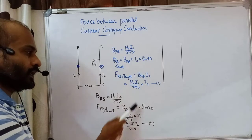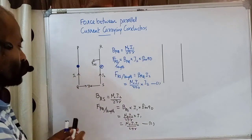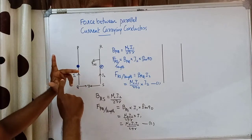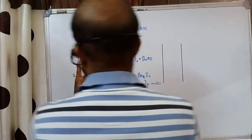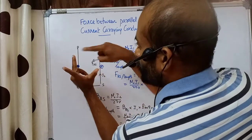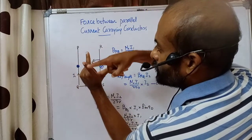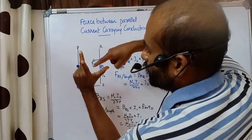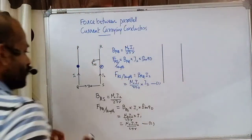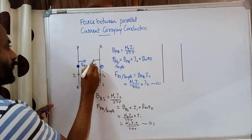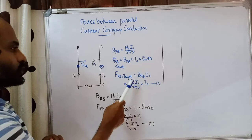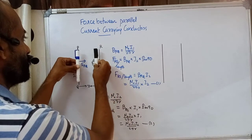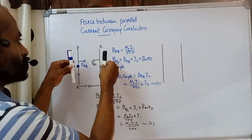We can see that both forces per unit length are equal in magnitude. For the direction of force on PQ, applying Fleming's left-hand rule: magnetic field is outward, current is upward — the force on PQ is directed towards the right side. So F_PQ per unit length points to the right. The two forces are equal in magnitude but opposite in direction, meaning the conductors attract each other. When currents are in the same direction, the conductors experience an attractive force.